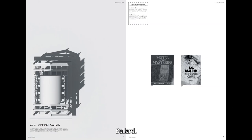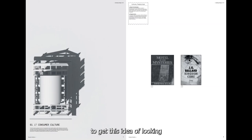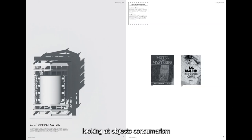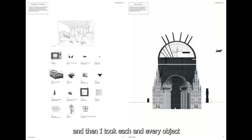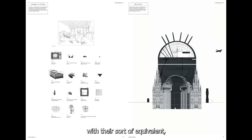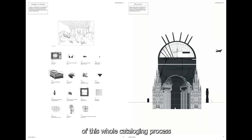I also looked at JG Ballard. I read Kingdom Come, which is based in a shopping centre. This is where I started to get the idea of looking at shopping centres in the future — what they might look like, and looking at objects, consumerism, and those kinds of themes. I started by breaking down all of the objects within Motel of the Mysteries. On the left is an illustration from the book and I took each object that was identified and matched it up with its modern day equivalent. This was the beginning of the whole catalogue-building process — looking at objects in a very detailed manner.